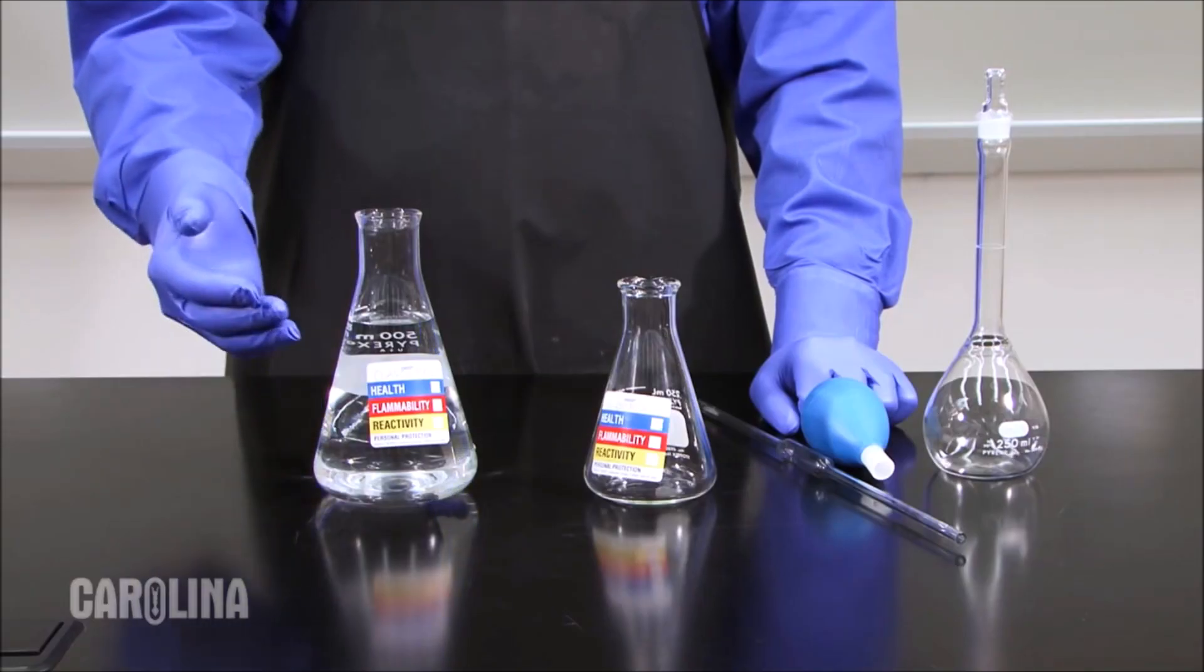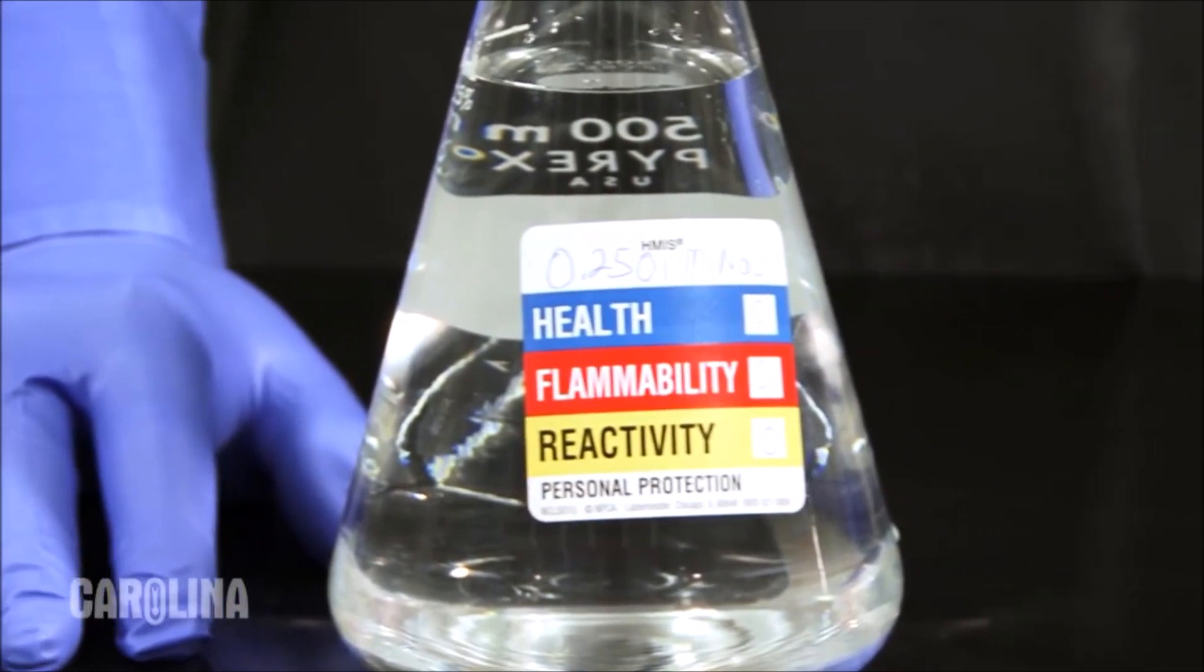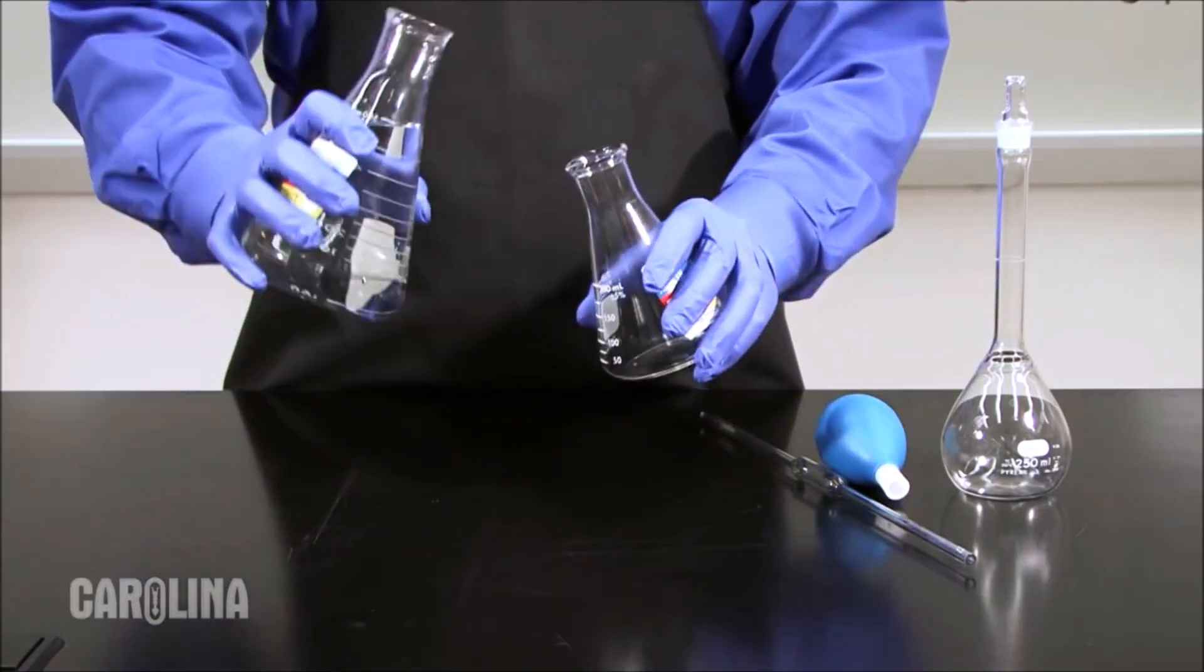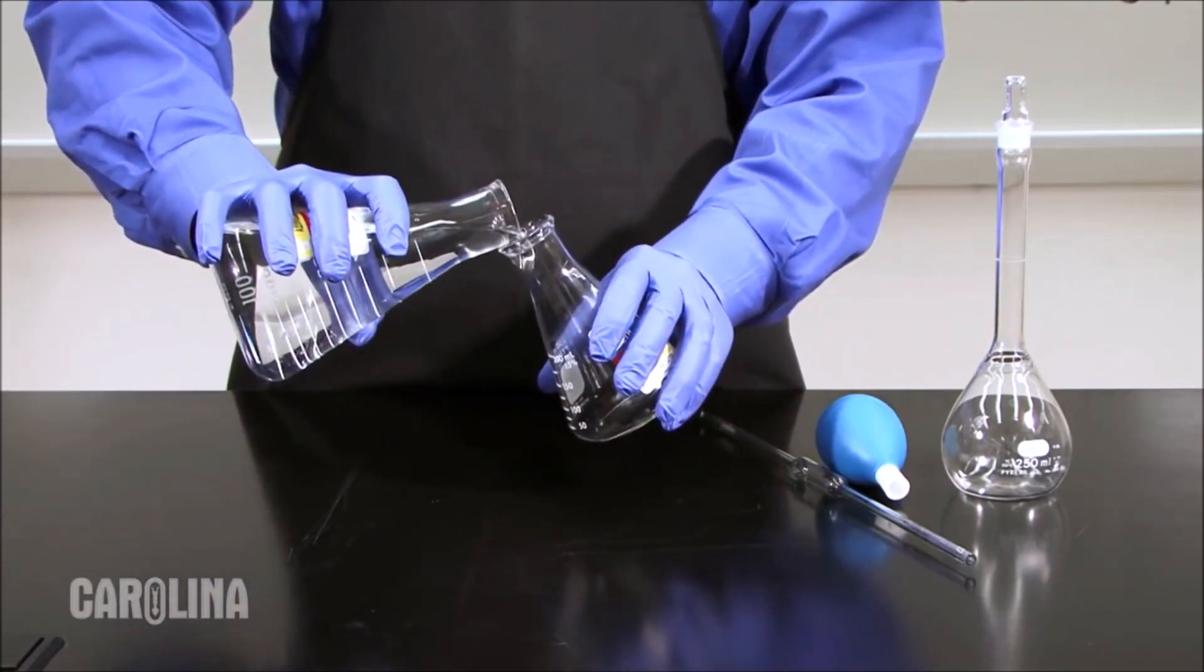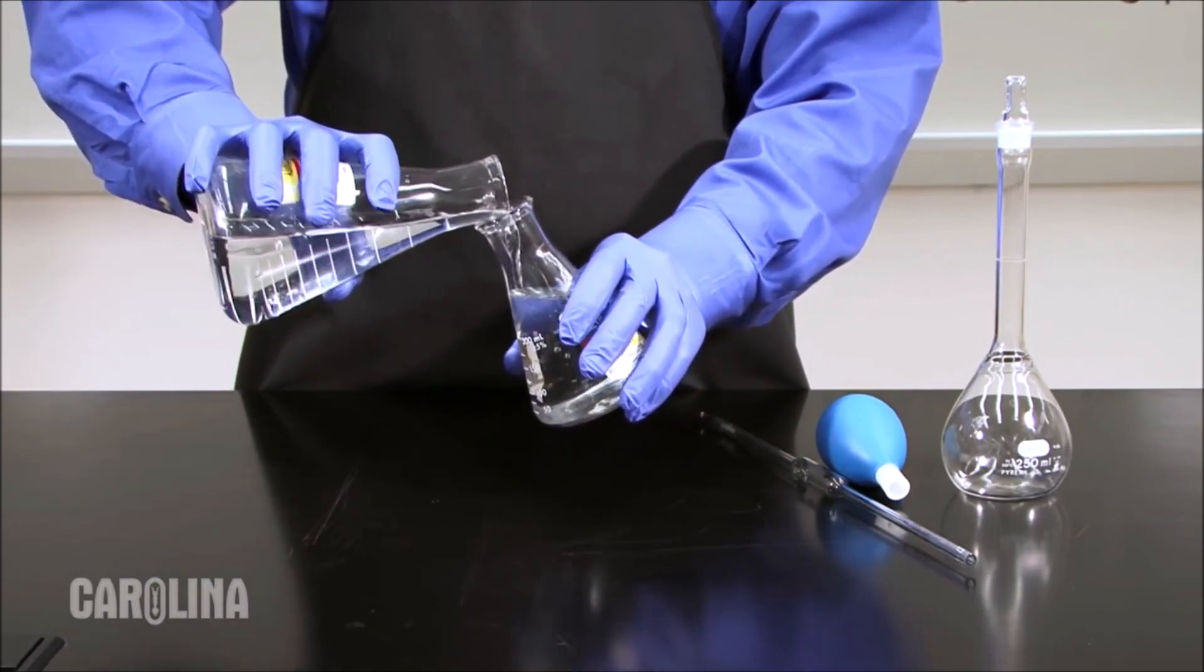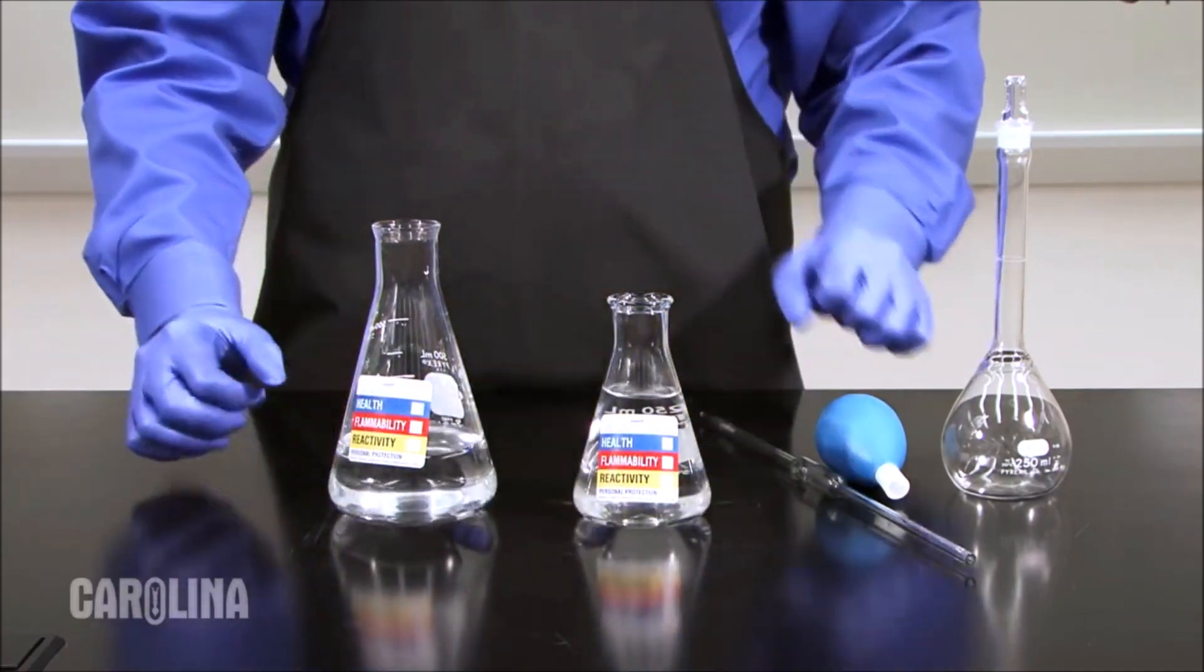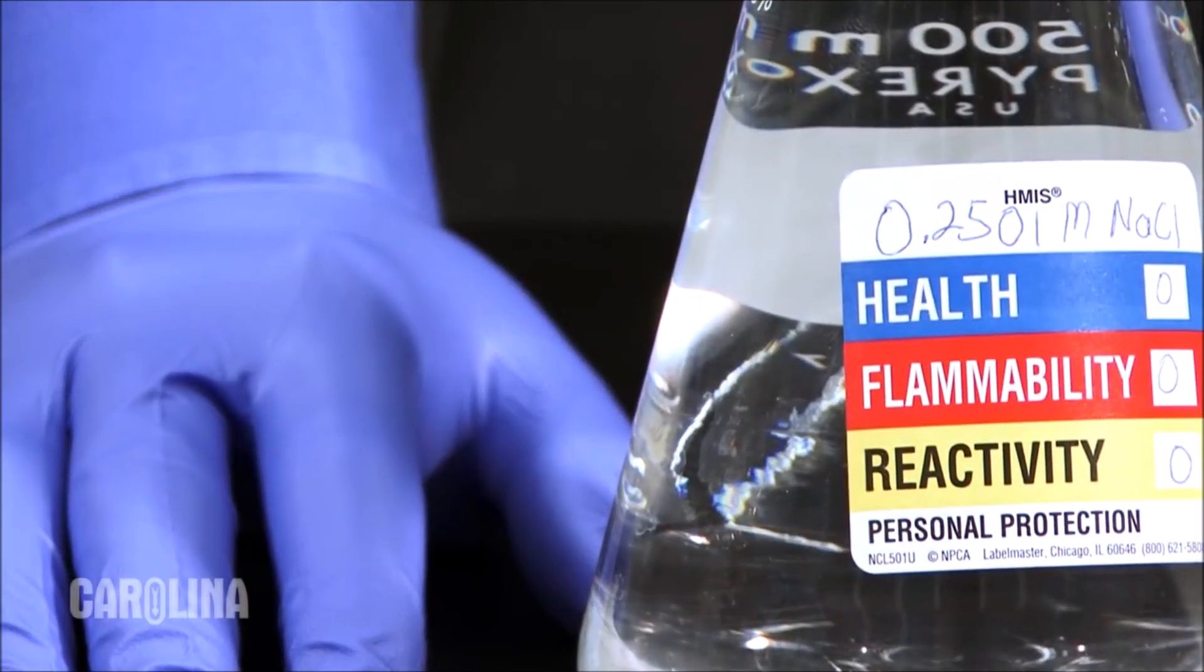This is the stock solution of sodium chloride that we will be diluting. Make sure to pour the stock solution into another container before inserting the pipette into the solution. This is because you do not want to contaminate your stock solution. In this case, I'm using an Erlenmeyer flask. Notice that I have clearly labeled the flasks to adhere to proper laboratory safety protocol.